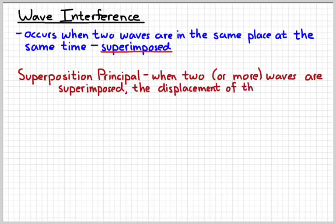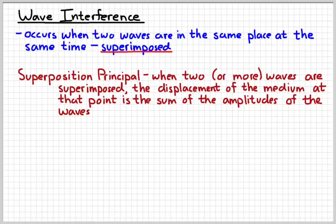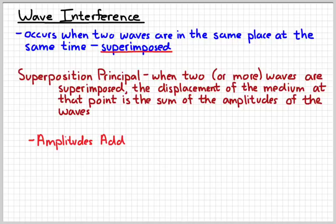When two waves are superimposed, the displacement of the medium at that point is the sum of the amplitudes of the two original waves. We're going to stick with two waves, but this could be as many waves as you can imagine in one place at the same time. This big idea is called the superposition principle. Basically, the idea is that the amplitudes of the waves add when they interfere with each other.